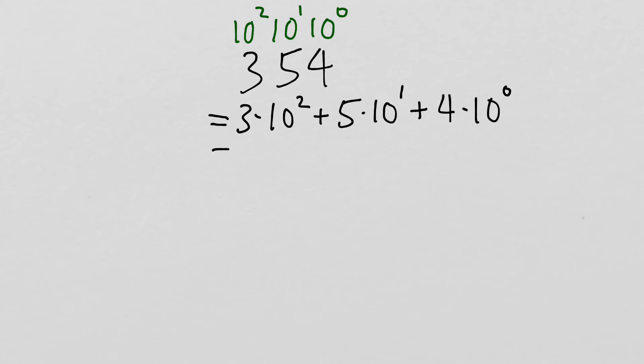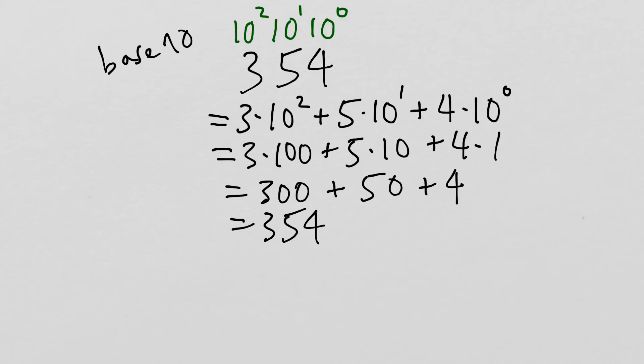Or, in other words, that's just 3 times 100 plus 5 times 10 plus 4 times 1 altogether, which is 300 plus 50 plus 4 equals 354. So that's how we in our decimal system, which is base 10, that's how we represent numbers.